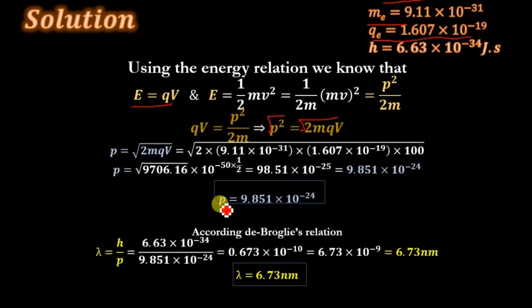Now we have the value of momentum. According to de Broglie relation, the wavelength λ = h/p, where h is the Planck's constant and p is the momentum. The value of Planck's constant is 6.63 × 10^-34 joules·second, and the momentum which we have determined is 9.851 × 10^-24.